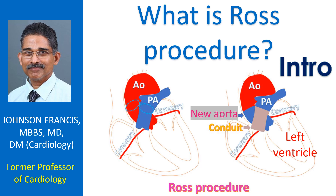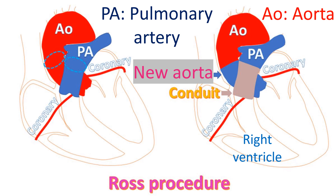The aorta is the great vessel arising from the left ventricle which takes blood to the whole body. Ross procedure was initially used in children and later in adults as well. In the Ross procedure, the pulmonary valve along with a part of the main pulmonary artery is taken and used instead of the damaged aortic valve.